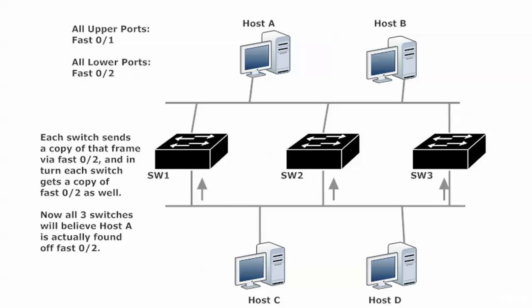Each switch is going to send a copy of that frame out their fast Ethernet 0/2 ports. Each switch ends up getting a copy sent by a neighboring switch, and the problem is the source MAC address is still going to be host A. So now all three switches believe host A is actually found off fast Ethernet 0/2, and just that quickly we end up with a mess — a routing loop — because that's just going to keep happening, with frames continually being flooded out, sucking up bandwidth.